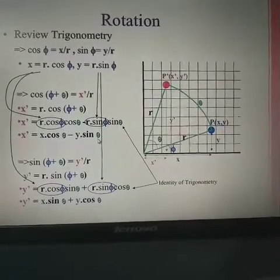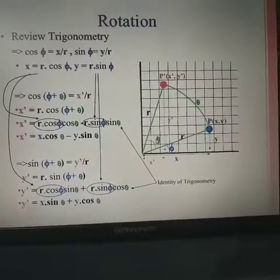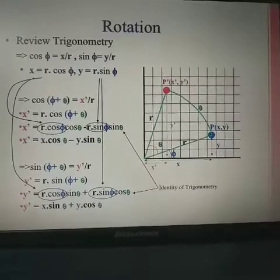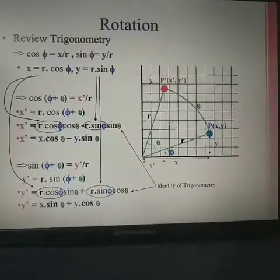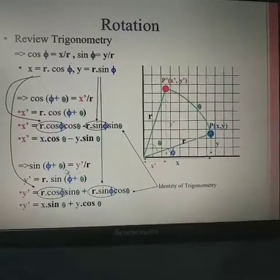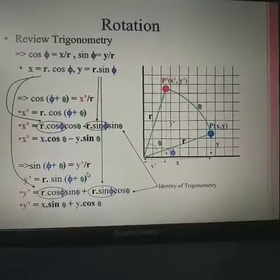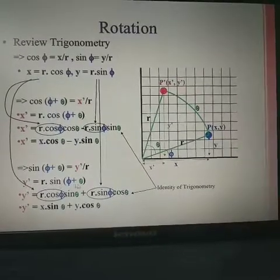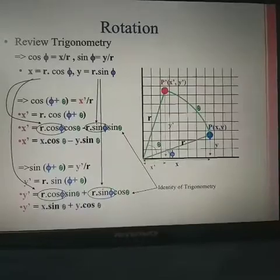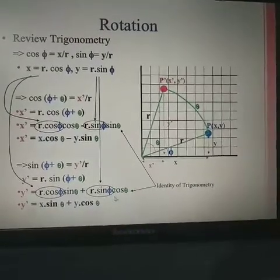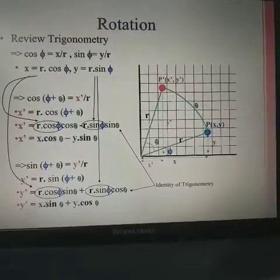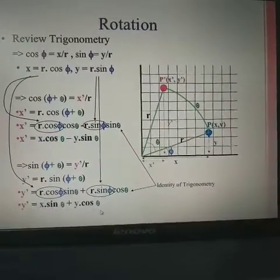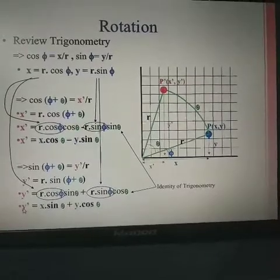Similarly, for the new y-coordinate: sin(phi + theta) equals y-new divided by r, so y-new = r·sin(phi + theta). Expanding: sin(phi + theta) = sin(phi)·cos(theta) + cos(phi)·sin(theta). Substituting, y-new = x·sin(theta) + y·cos(theta). These are the new points for the y-axis, and in this way we can easily calculate the new coordinates.